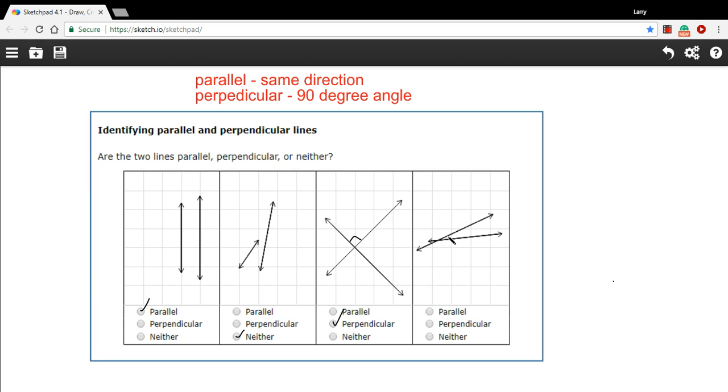And finally, these two, they cross, but not at a 90 degree angle. So these are neither. So that's a little work with parallel and perpendicular lines.